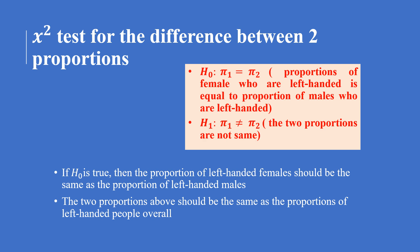The null hypothesis states that the proportion of females who are left-handed is equal to the proportion of males who are left-handed. The alternative hypothesis states that the two proportions are not the same. If the null hypothesis is true, the proportion of left-handed females should be the same as the proportion of left-handed males — that is, π₁ equals π₂.